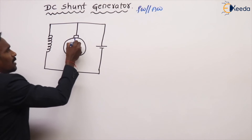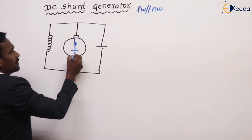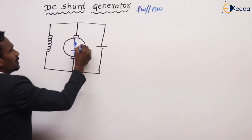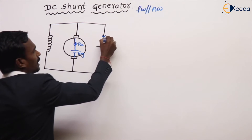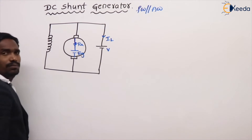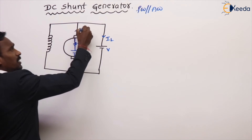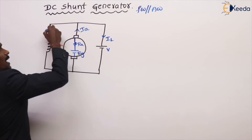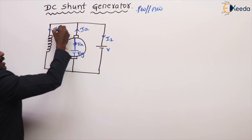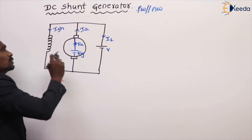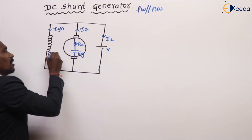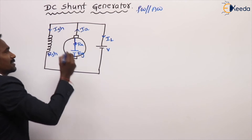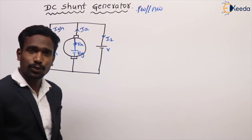Here we have armature resistance and generated EMF EG, RA, terminal voltage V, and load current IL. The armature current splits, and the current flowing through the parallel branch is called the shunt field current, because it flows through the shunt field winding. That resistance is called the shunt resistance RSH.